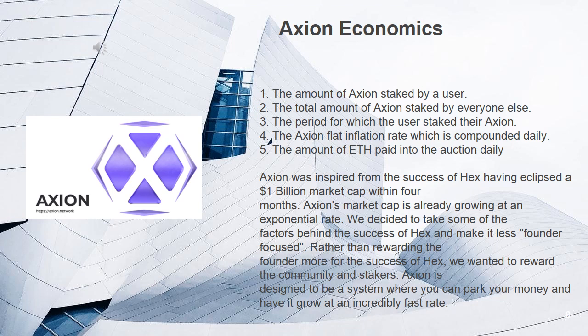Axion generates interest through the idea of inflation. The Axion smart contract pays out rewards to stakers based on 5 basic principles: 1. The amount of Axion staked by a user. 2. The total amount of Axion staked by everyone else. 3. The period for which the user staked their Axion. 4. The Axion flat inflation rate, which is compounded daily. 5. The amount of ETH paid into the auction daily.